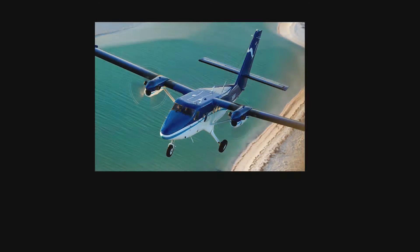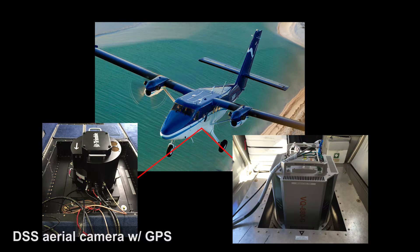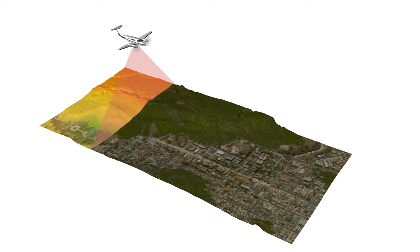Remotely sensed data from aircraft is collected to map the shoreline. The use of aircraft-based sensors, such as a digital camera and topobathy lidar system, allows large areas to be surveyed in a short amount of time.